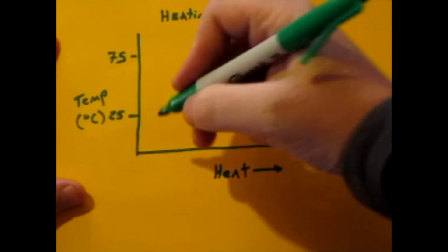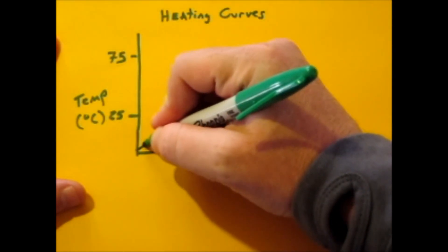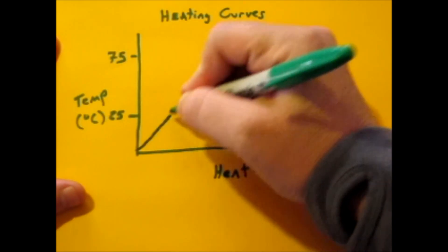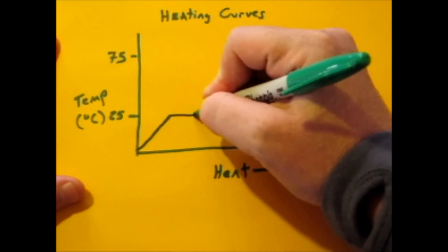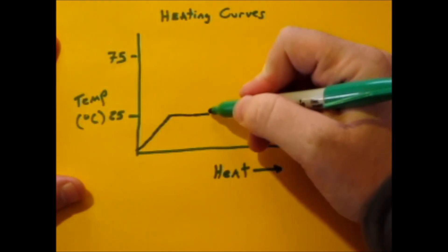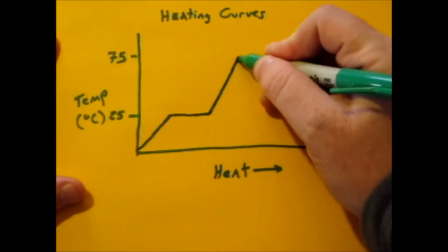Most heating curves are going to start as a solid, which is down here, and you're going to heat the solid up. Eventually, you're going to hit a temperature, and the temperature is going to stop changing. It's going to remain the same. This is where a phase change occurs, and now it's going to be a liquid, and the liquid's going to heat up.